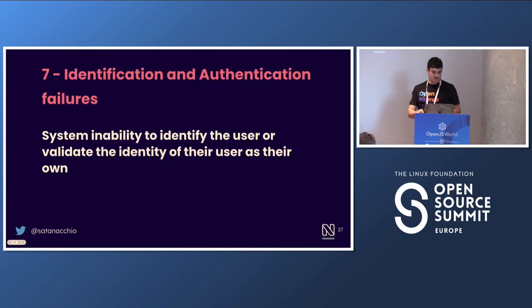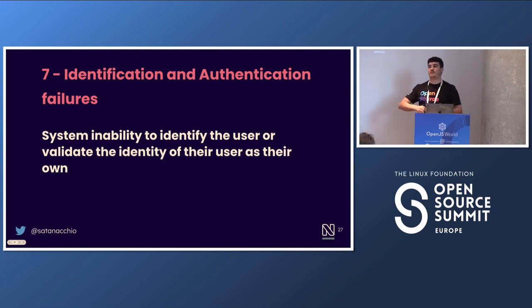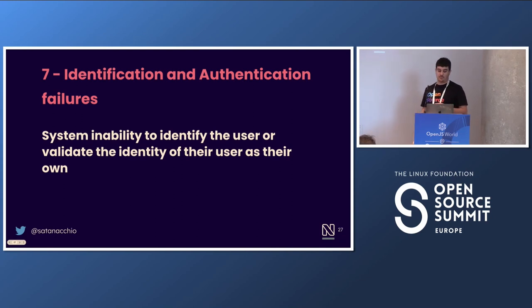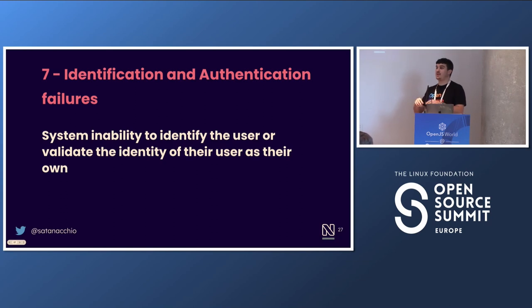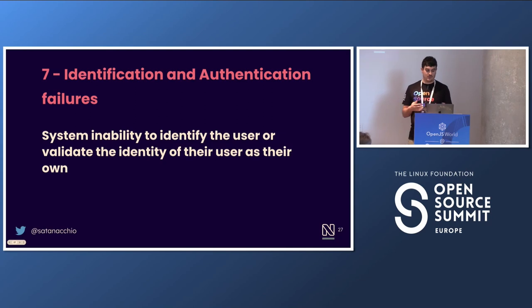Number seven is Identification and Authentication Failures, and as mentioned, these are all interconnected — doing something wrong opens you up to all sorts of vulnerabilities. This happens when you cannot identify your user or you cannot be 100% sure the user is who they claim to be. For example, your authentication system is broken or not secure enough — you're not using multi-factor authentication, or you allow brute force attacks on your logins.